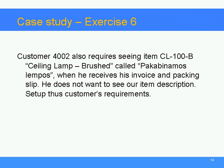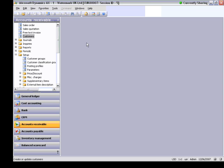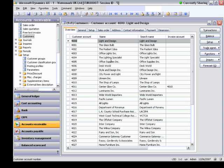Exercise 6: Customer 4002 also requires seeing items CL100 beams, ceiling lamp brush, called Pocardinomous Lampus when he receives his invoice and packing slip — he does not want to see our item description. I go back to my Dynamics AX forms. In the Account Receivable module, select the form Customer and locate the same customer 4002.